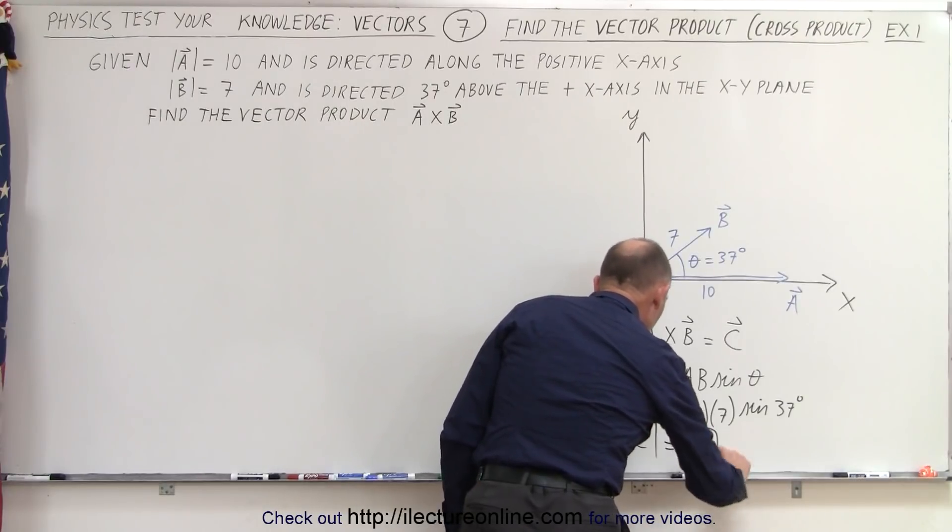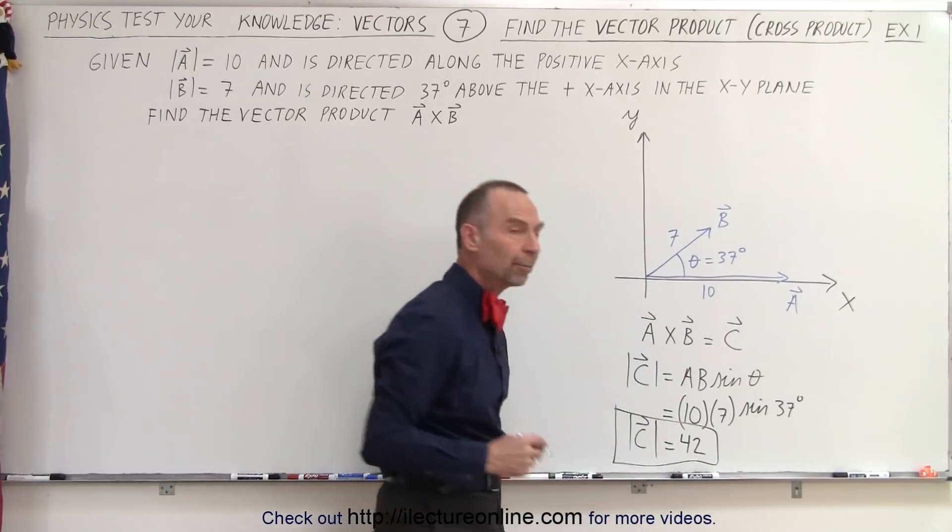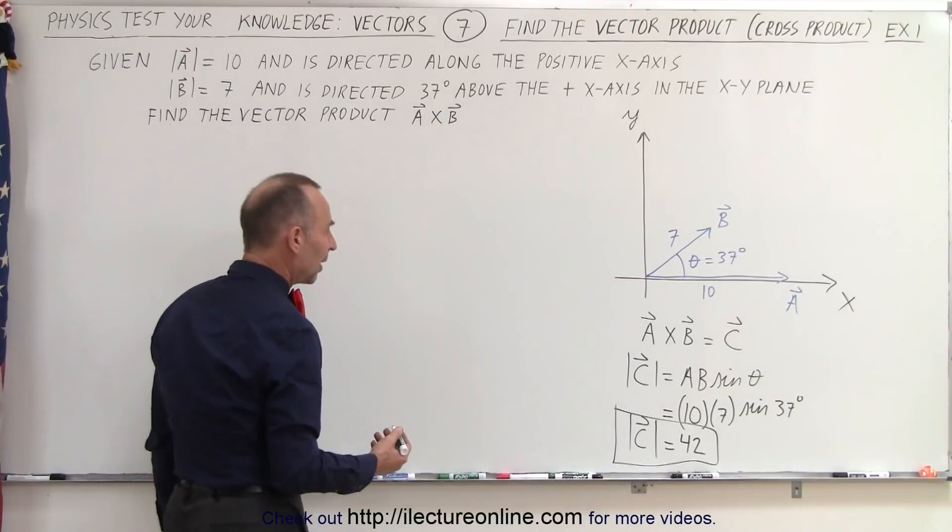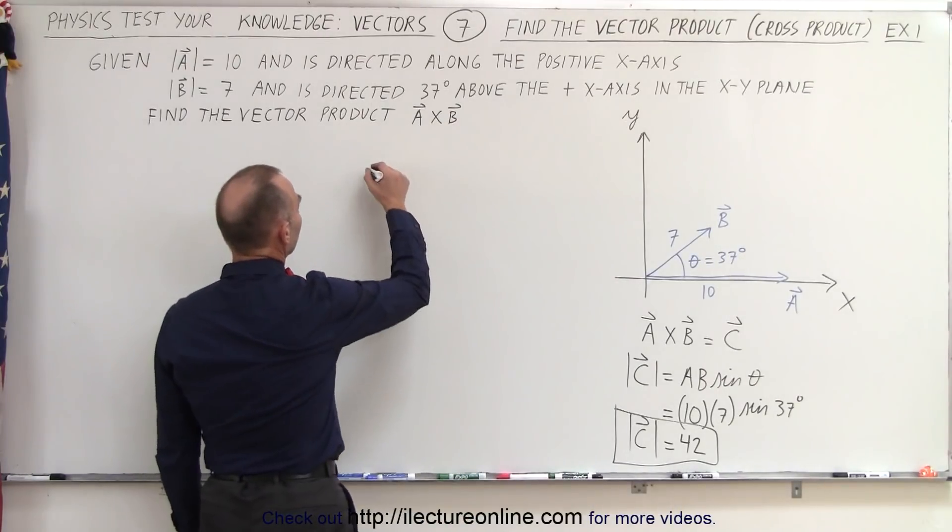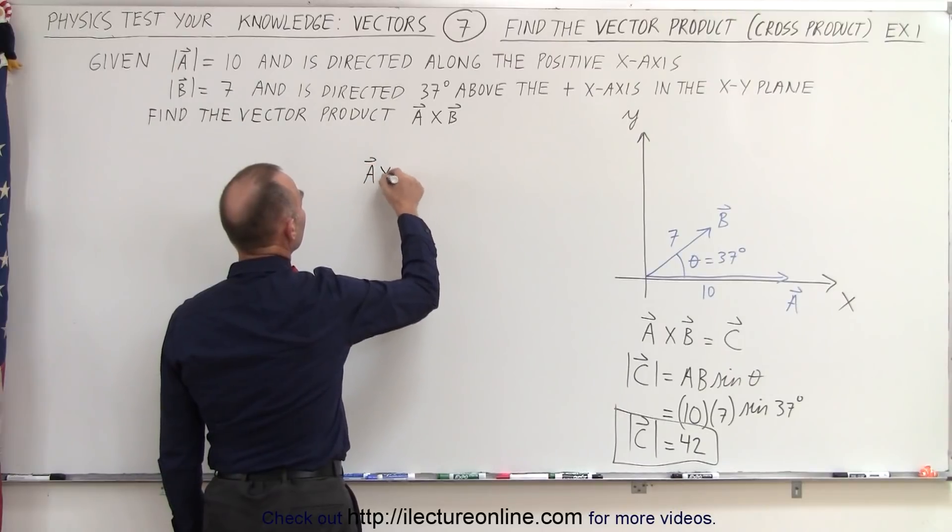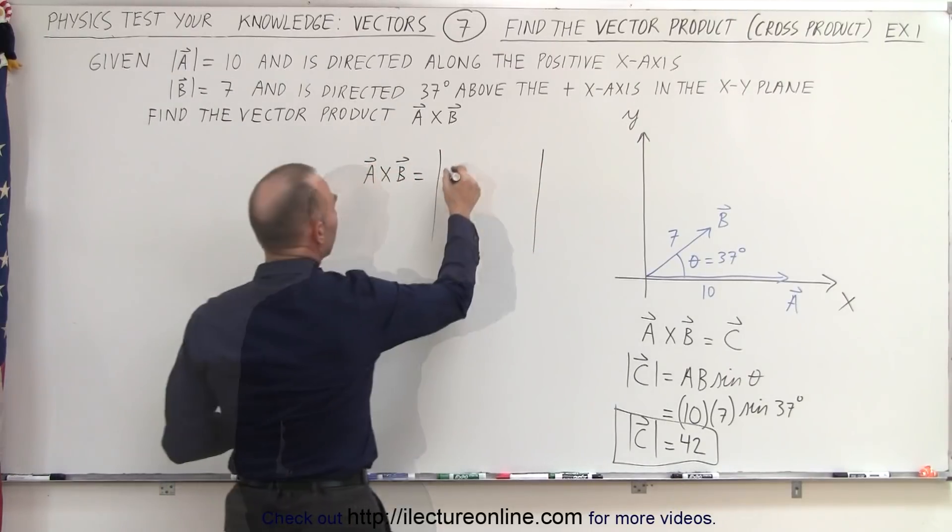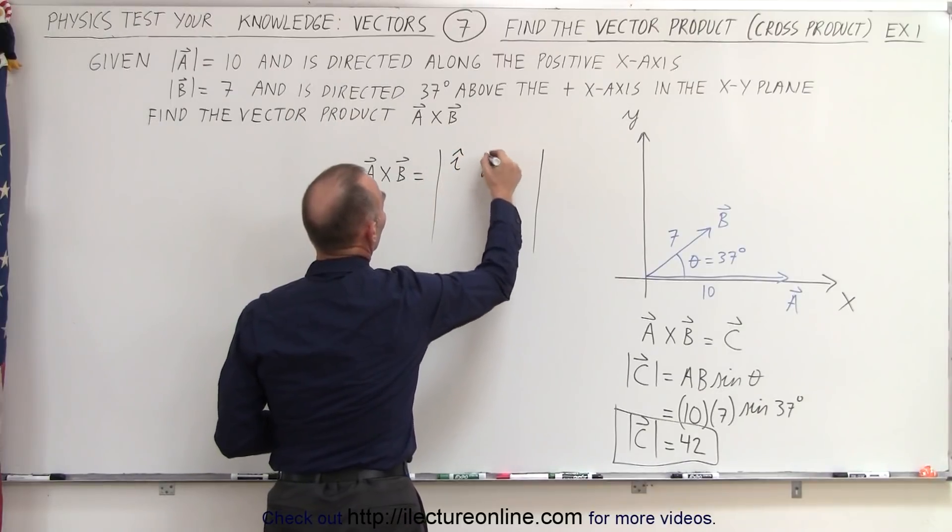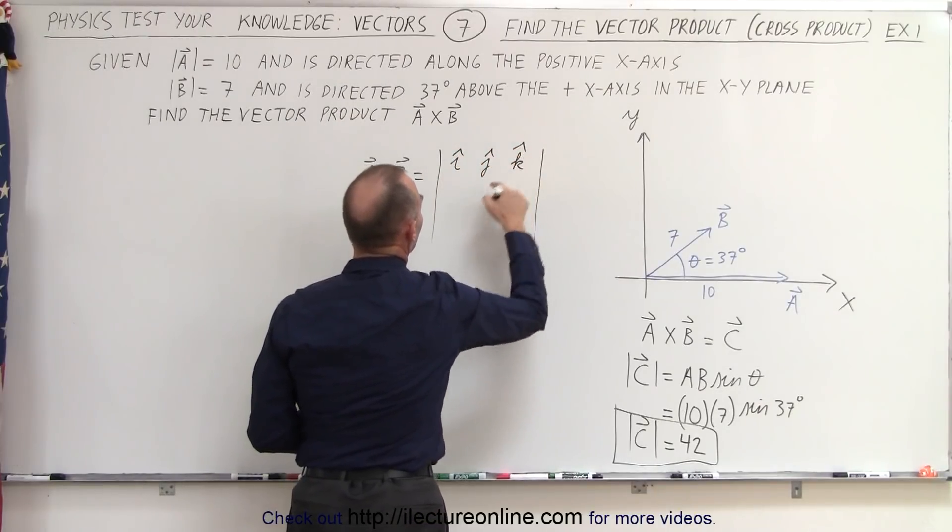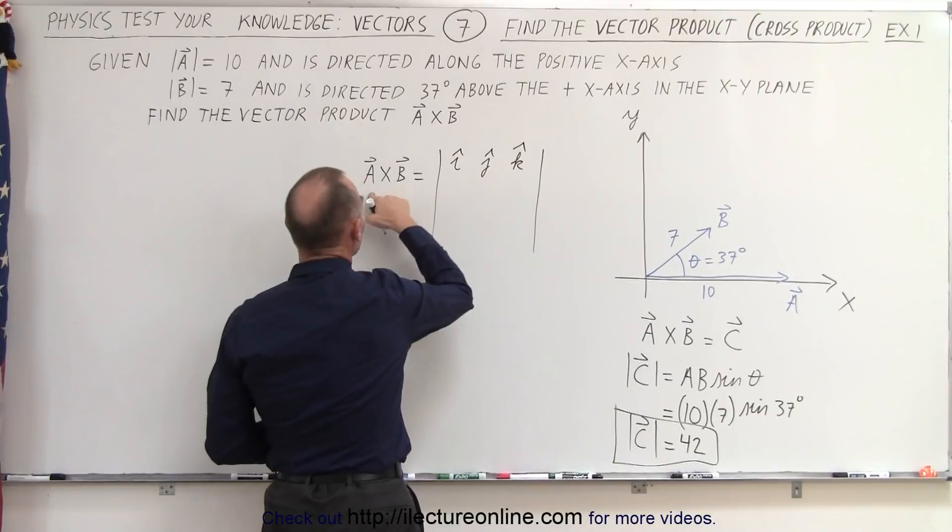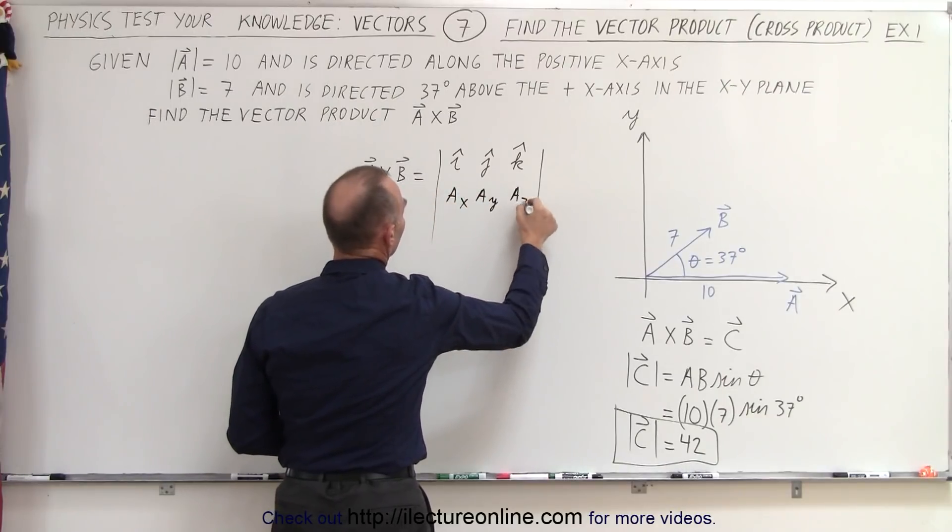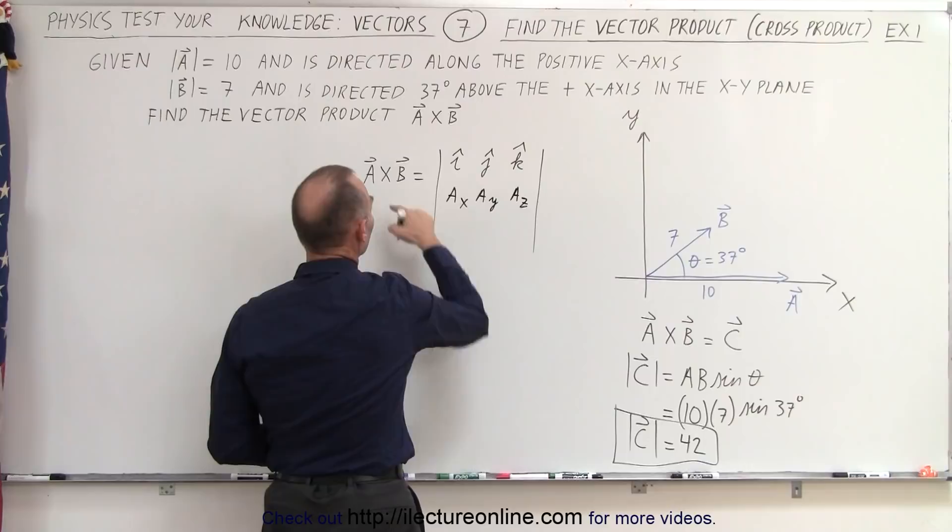But that's only the magnitude. That's not really the dot product. To find the dot product, we have to use the following method. A cross B is equal to the I, J, K components, the X, Y, and Z components of the first vector, and the X, Y, Z components of the second vector.